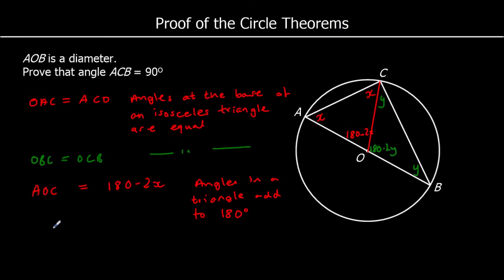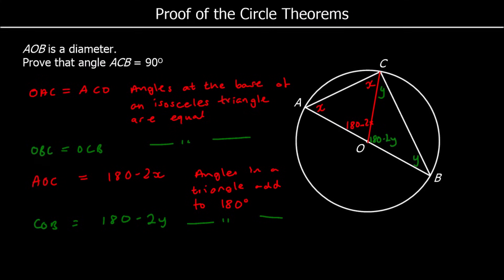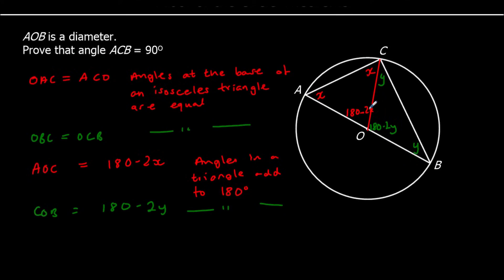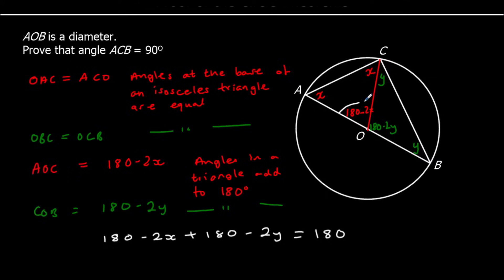And COB is going to be 180 take away 2Y, for the same reason — angles in a triangle add up to 180. So we have 180 minus 2X and 180 minus 2Y on a straight line, and a straight line adds up to 180 degrees. So 180 minus 2X plus 180 minus 2Y equals 180 degrees, because angles on a straight line add to 180 degrees.